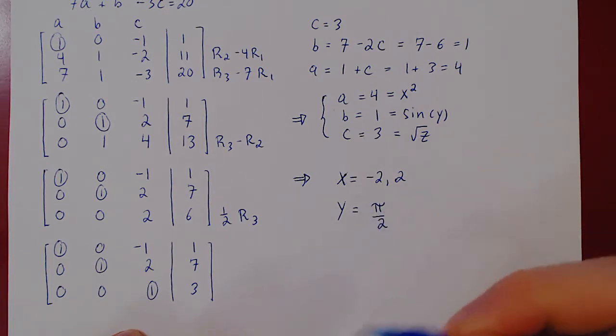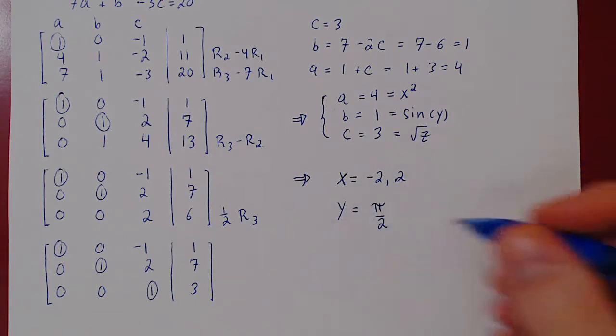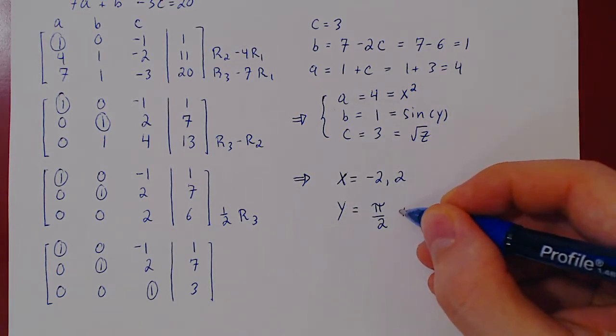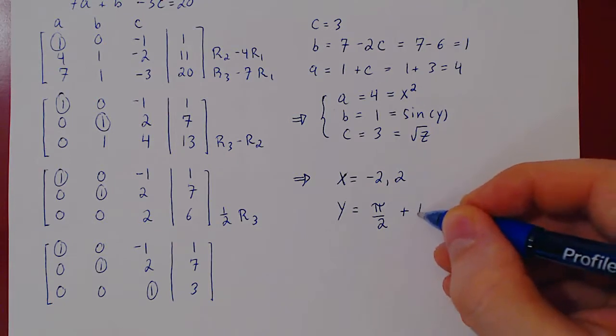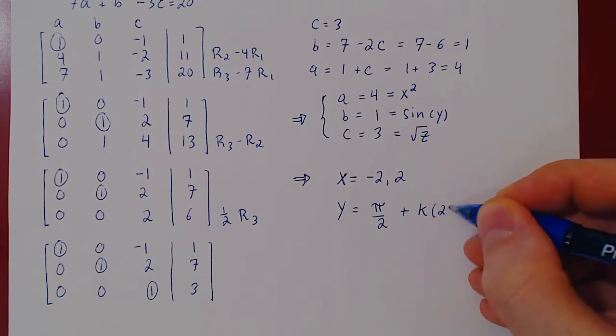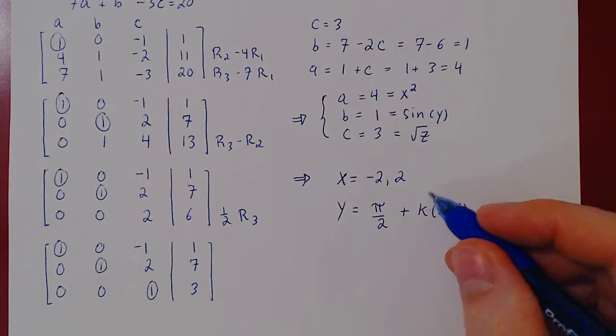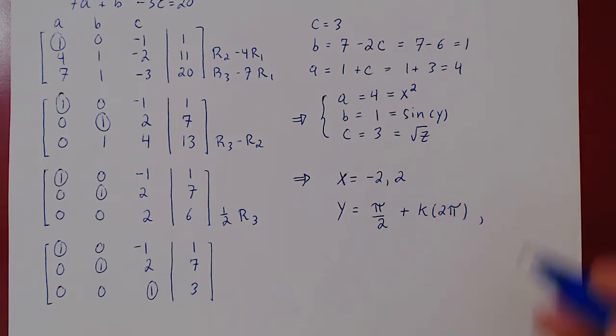But you can add to pi over 2 any multiple of any integer multiple of 2 pi, and you will return at the very same position. So we'll have an infinite number of answers for y. We write this as y equals pi over 2 plus k times 2 pi. But we must specify that k must be an integer multiple of 2 pi. So k can be any integer value.